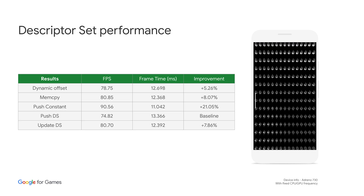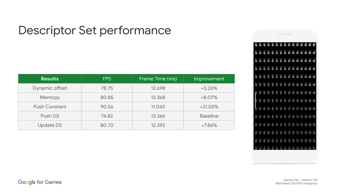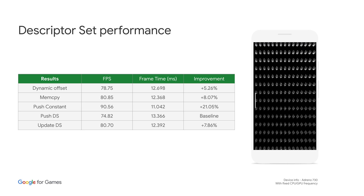Repeating the test on an Adreno 730 device, which supports the PushDescriptorSet extension, performance results are similar to the Pixel 7 Pro, but PushDescriptorSet is the slowest on this device.